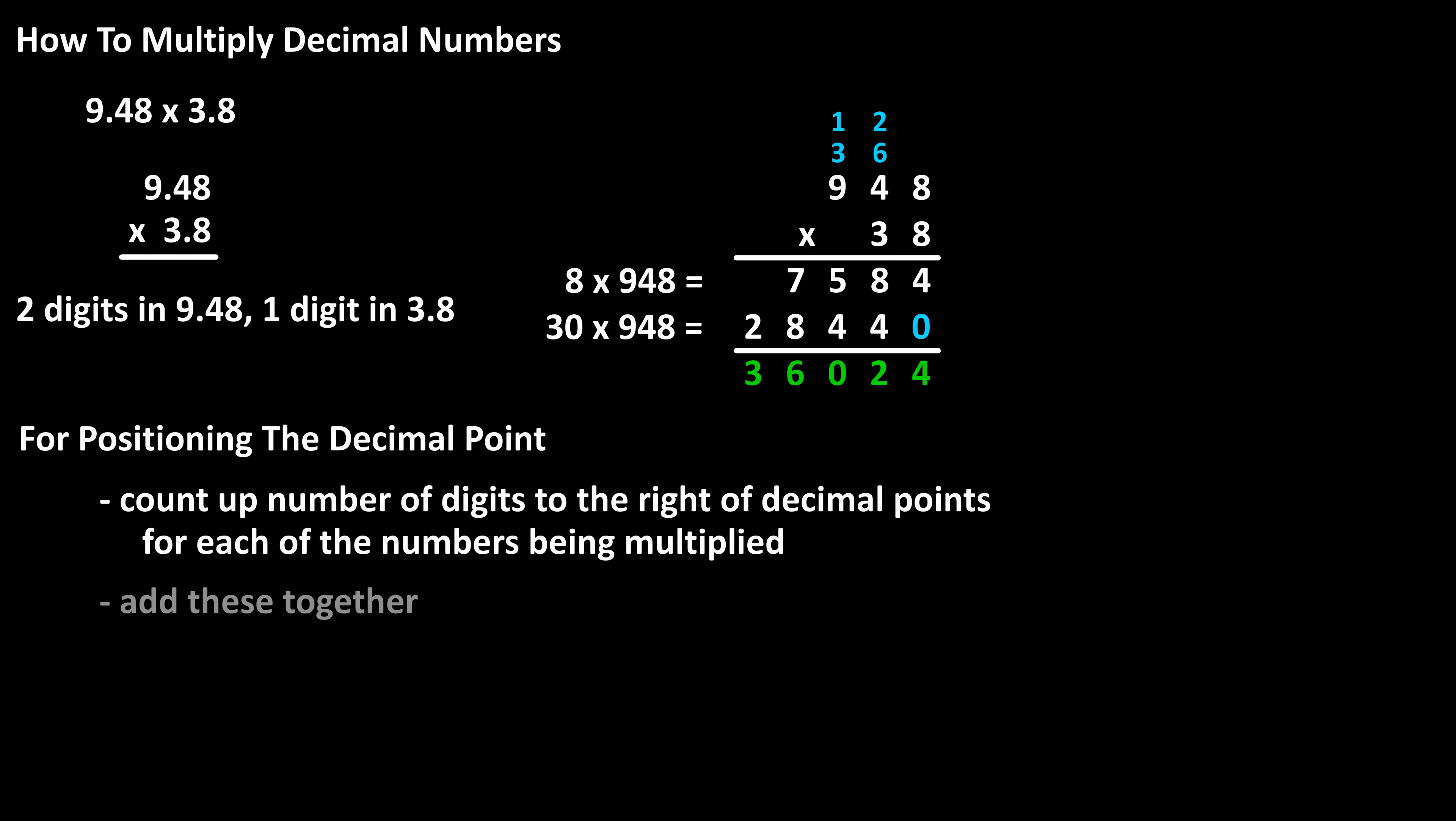The second step is to add these together. So two digits plus one digit equals three.